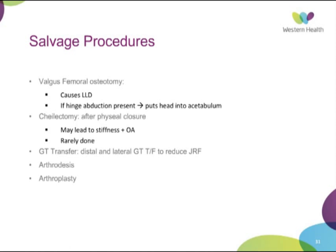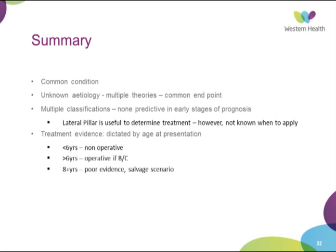In summary, Perthes disease is a common condition of unknown etiology, largely based around the avascularity theory. Multiple classification systems are predictive of prognosis, with the lateral pillar classification being the most useful in determining treatment, though it's difficult to apply because you don't know if a B will become a C. Treatment is largely dictated by age: under six, all should be non-operative; over six with lateral pillar B or C, there is an argument to operate on either the femoral or pelvic side. For those eight and older, there is poor evidence, and in the salvage scenario — valgus osteotomies, shelf procedures — there is no real consensus in the literature.